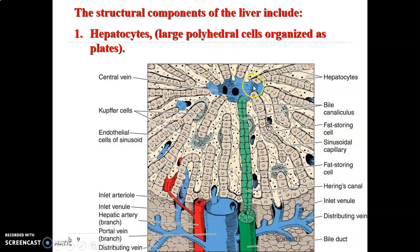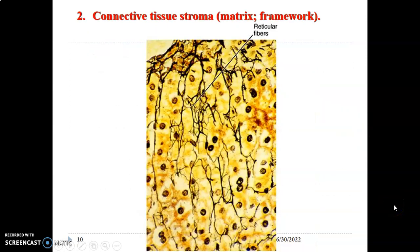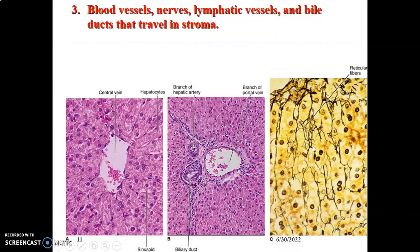The biliary canaliculi and hepatocytes radiate from the central vein. The portal triad consists of the portal vein, bile duct, and hepatic artery. In between the hepatic rays you have Kupffer cells and sinusoids. The connective tissue stroma is made up of reticular fibers, which are abundant in the liver.